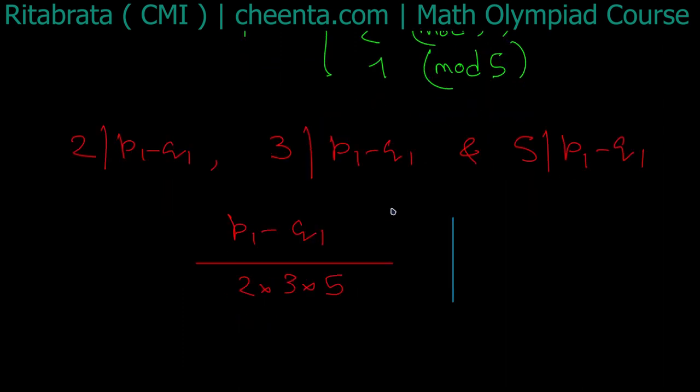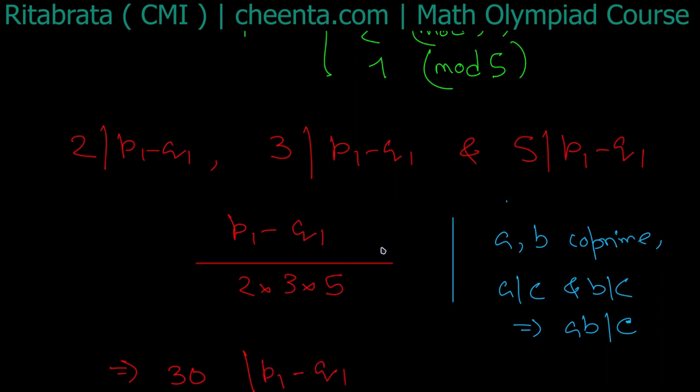So if a and b are coprime, then a divides c and b divides c, that would also imply ab divides c. This is a very standard exercise. From that, you can easily tell that as 2, 3, 5 are coprime and all of them divide p1 - q1, so their product, that is 5 times 2 times 3, that is 30, that also divides p1 - q1. And we are done.